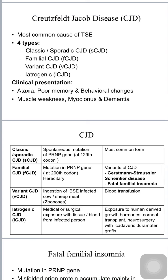Creutzfeldt-Jakob disease is the most common form of transmissible spongiform encephalopathy and is of four types: classical/sporadic, familial, variant, and iatrogenic. Clinical presentation initially includes behavioral changes — the patient is irritable with poor memory and incoordination of voluntary muscles in the form of ataxia and tremors — followed by muscle weakness, inability to walk, myoclonus (jerky muscle movements), and dementia.